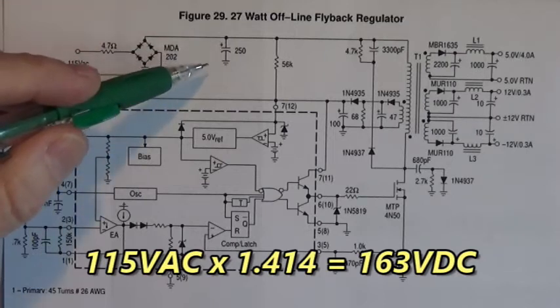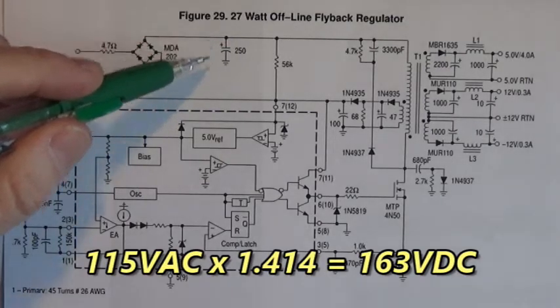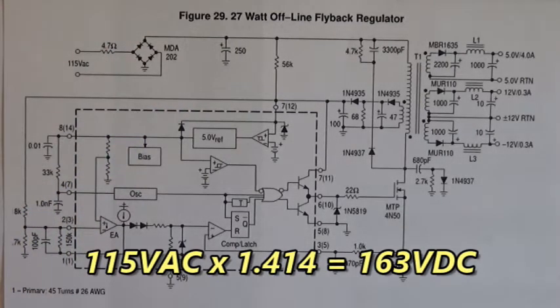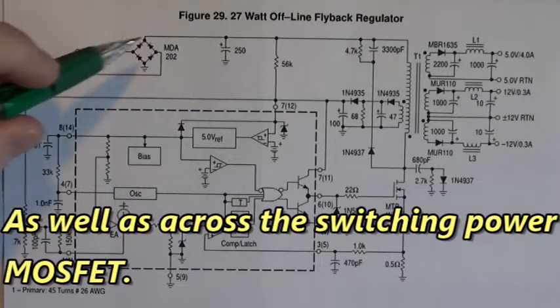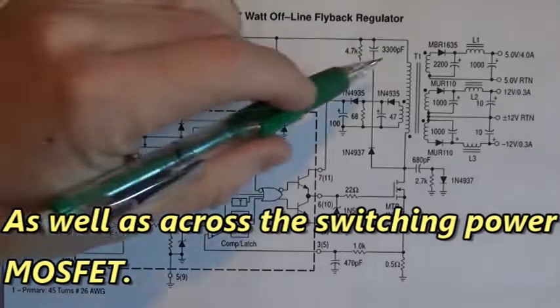So you're going to have a large DC charge across this bus capacitor right here. And on the primary winding, on this side of the primary winding, you're going to have that 170 volts DC. So be very careful here.